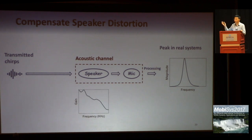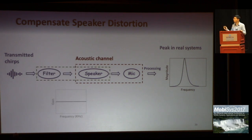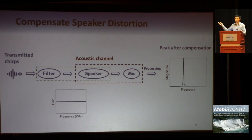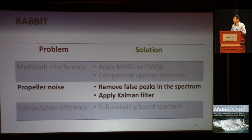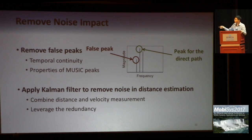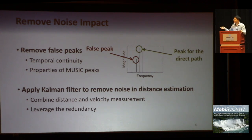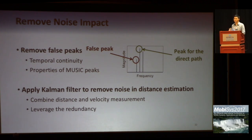One major source of distortion is the speaker, which has various gains over different frequency components. To solve this problem, we introduce a digital filter to compensate for speaker distortion. After compensation, we see much sharper peaks. Another problem is strong propeller noise. When it is present, we observe some false peaks in the spectrum derived by MUSIC. We identify essential properties of MUSIC and leverage them to remove false peaks and identify the correct peaks corresponding to direct-path transmission. We also apply a time filter to combine velocity measurement with distance measurement to enhance robustness against noise.